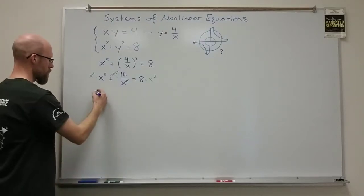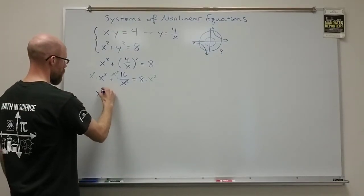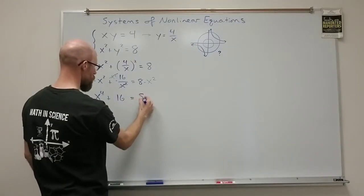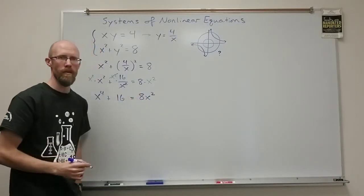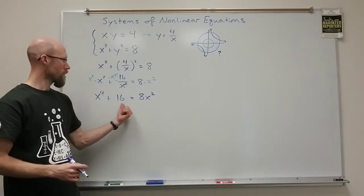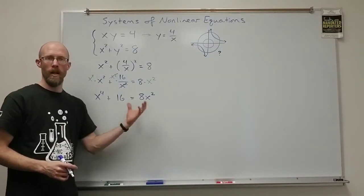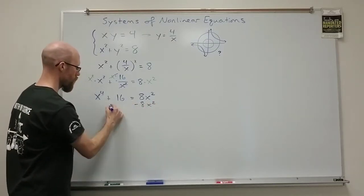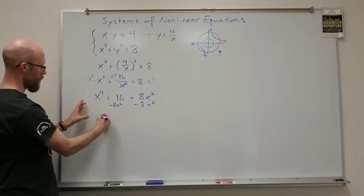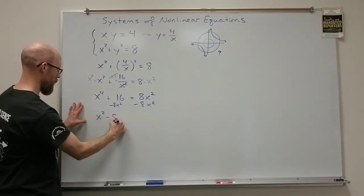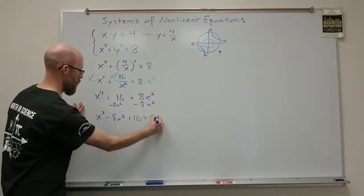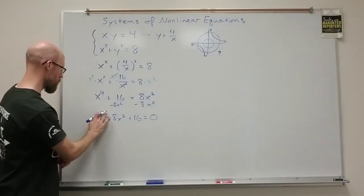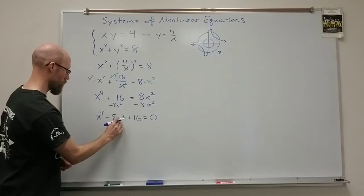And they add up on the left. So, this becomes x to the fourth plus 16 equals 8x squared. From there, this is a polynomial equation. I like to get a zero on one side. So, I'm going to subtract off the x squared from both sides, stick that in the middle. So, I've got decreasing powers of x. I've got a fourth degree polynomial. That should be a four there. X to the fourth.